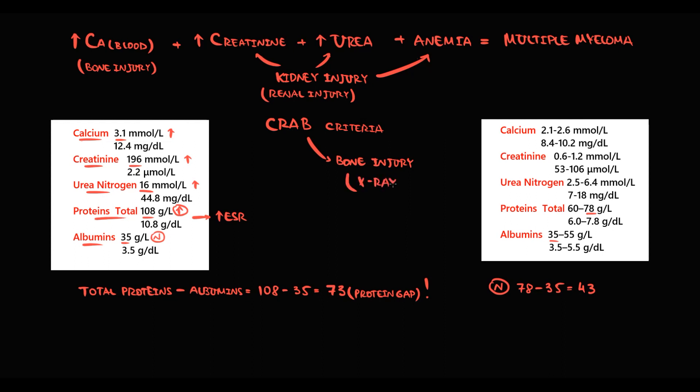To determine the fraction of proteins that caused the protein gap, we would prescribe electrophoresis, where we will most probably see a monoclonal component—increasing gamma fraction due to increasing monoclonal immunoglobulins. To make a diagnosis of multiple myeloma, we should perform bone marrow aspiration where we have to find more than 10% plasma cells.